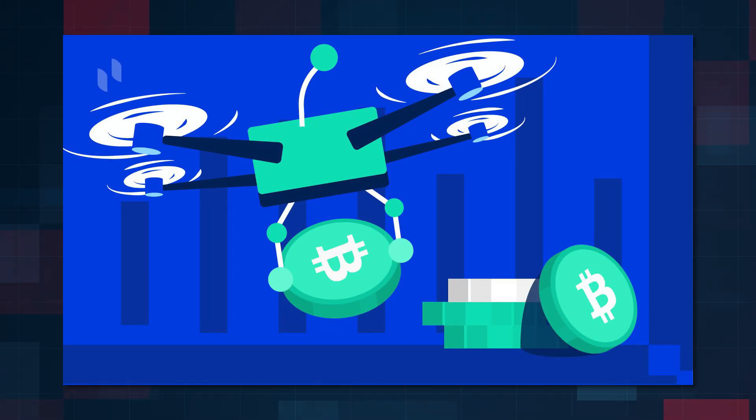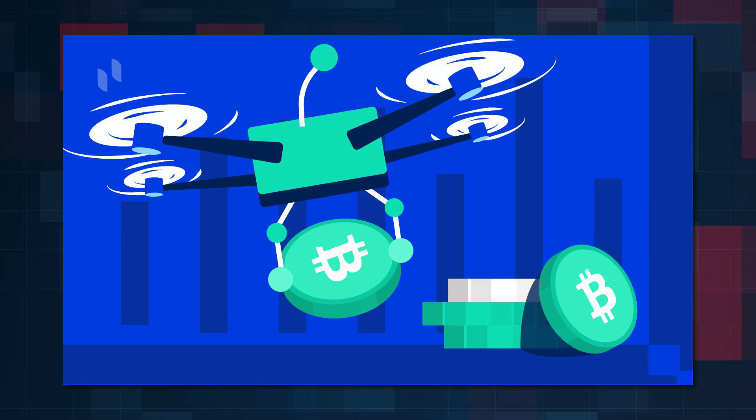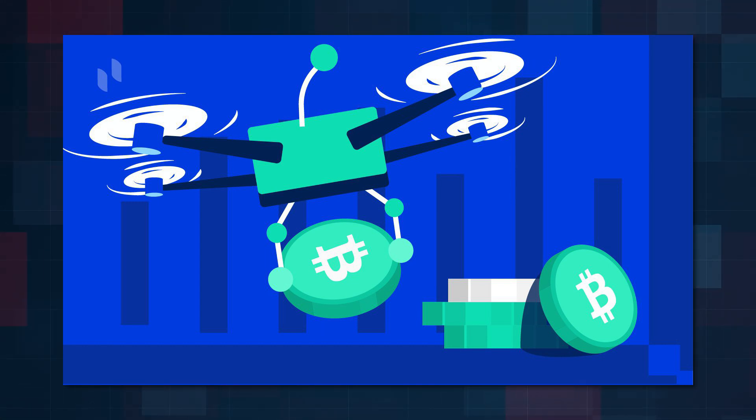The profits earned by arbitrageurs come at the expense of liquidity providers, resulting in losses. Traditional AMM schemes also require large liquidity volumes to achieve the same level of price impact as order book-based exchanges, and most of the liquidity will never be used by rational traders. These limitations are being overcome by innovative projects with new design patterns such as hybrid AMM, dynamic AMM, proactive market makers, and virtual automated market makers.